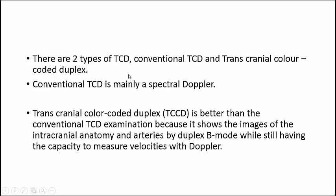There are two types of transcranial Doppler: conventional transcranial Doppler and transcranial color-coded duplex. Today we'll talk about transcranial color-coded duplex. It is a full study of the blood flow through the cranial basal vessels. It's better than conventional TCD because it shows images of intracranial anatomy and arteries by B-mode while still having the capacity to measure velocity with Doppler. It provides color flow, Doppler study, and real flow.